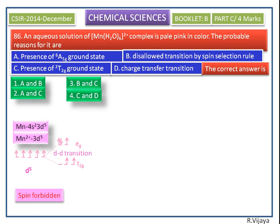Now we check out the answer. Option B is the disallowed transition by spin selection rule, so this is one of the correct answers. Here we are getting d-d transition, not charge transfer transition.